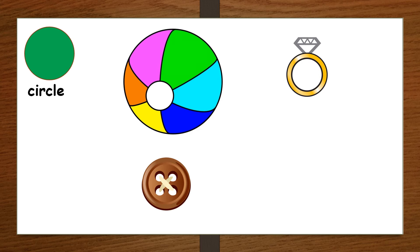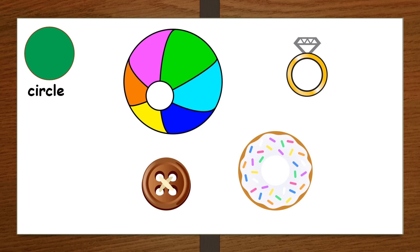What is this? It's a ring. The ring is a circle. This is a donut. Do you like to eat donut? The donut is a circle.